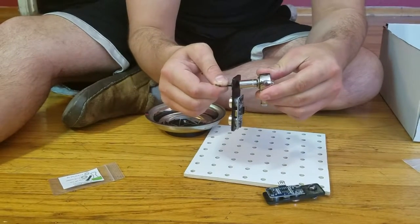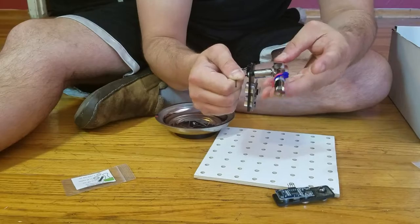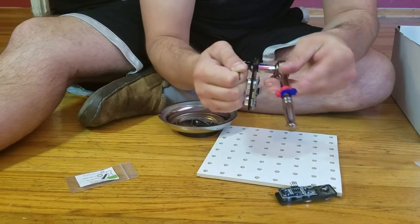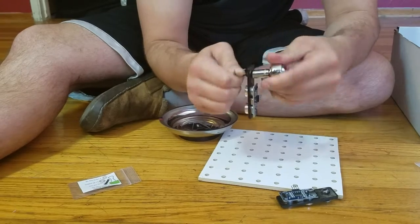And then I'm going to take this socket wrench and spin it one good turn before starting to do the ratcheting. Now I can tighten it down.